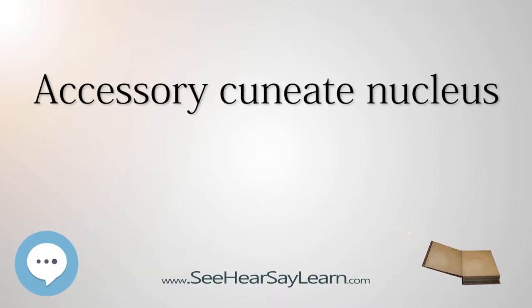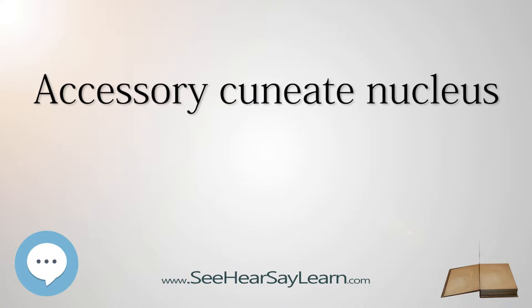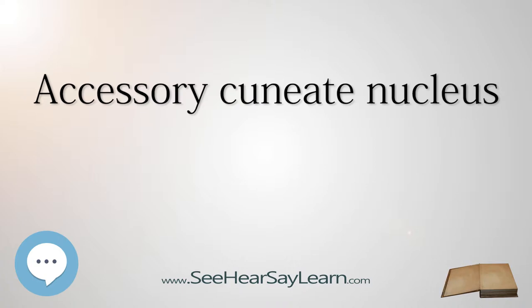The accessory cuneate nucleus is located lateral to the cuneate nucleus in the medulla oblongata at the level of the sensory decussation, the crossing fibers of the posterior column/medial lemniscus tract.